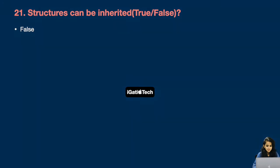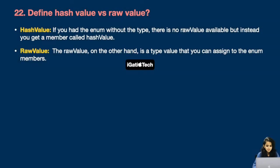Next question: Define hash value versus raw value. If you define an enum without specifying a type such as String or Int, there is no raw value available, but instead you get a member called hash value. The raw value, on the other hand, is the typed value that you can assign to the enum members.